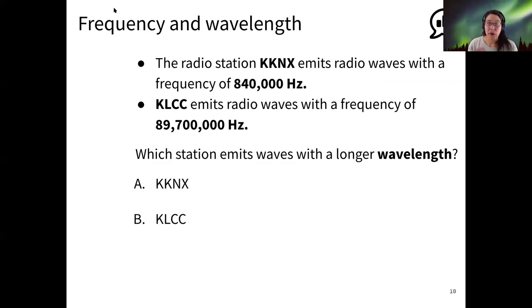So radio is one of the types of light. It is a long wavelength type of light. So let's say that we have two radio stations, KKNX and KLCC, and let's say that they have different frequencies that they emit at. Which of these stations would have the longer wavelength based on what you see about the frequency?